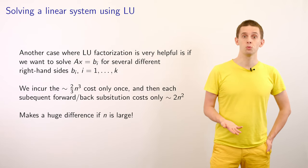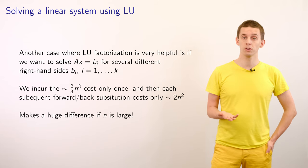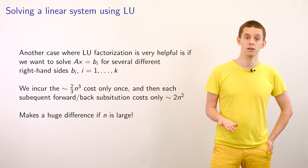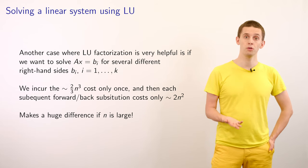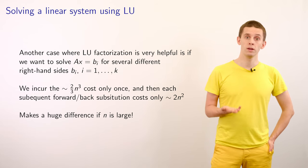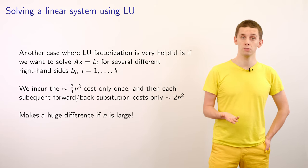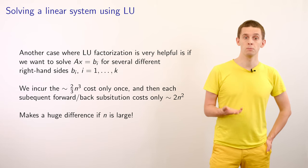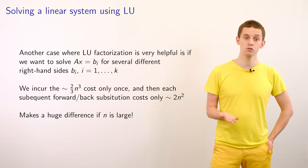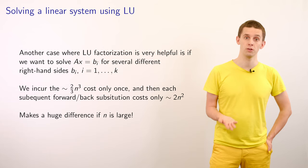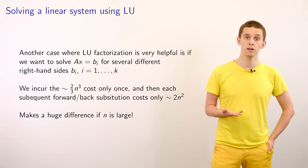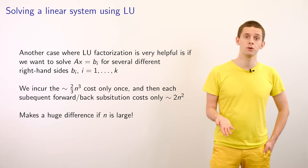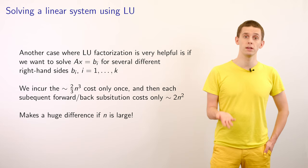Another case where LU factorization is useful is when we want to solve Ax = b for several different right-hand sides b_i from i = 1 to k. We incur the factorization cost of 2n³/3 only once. Each subsequent forward and back substitution then costs only 2n² operations. For large n, this makes a huge difference in practice.